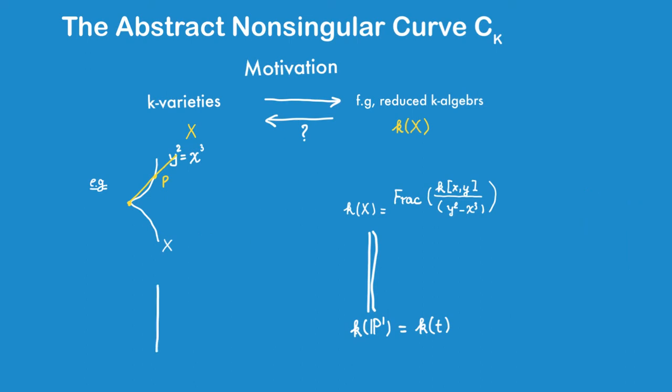So we see that in general, this is not possible. We cannot recover the variety uniquely, up to isomorphism, from its function field, even in the case of curves.